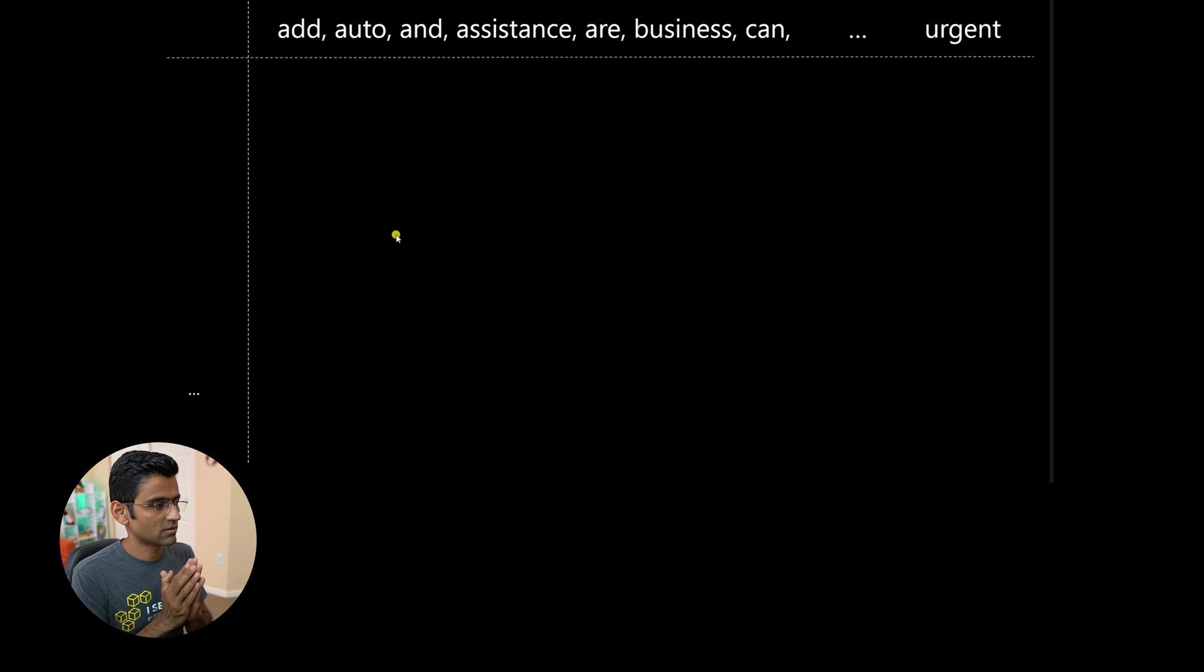Let's look at the second approach. Second approach is all these words are part of my vocabulary. Add, auto, end. And three dot means let's say I have 2,000 words in my vocabulary. You put them like this at the top.